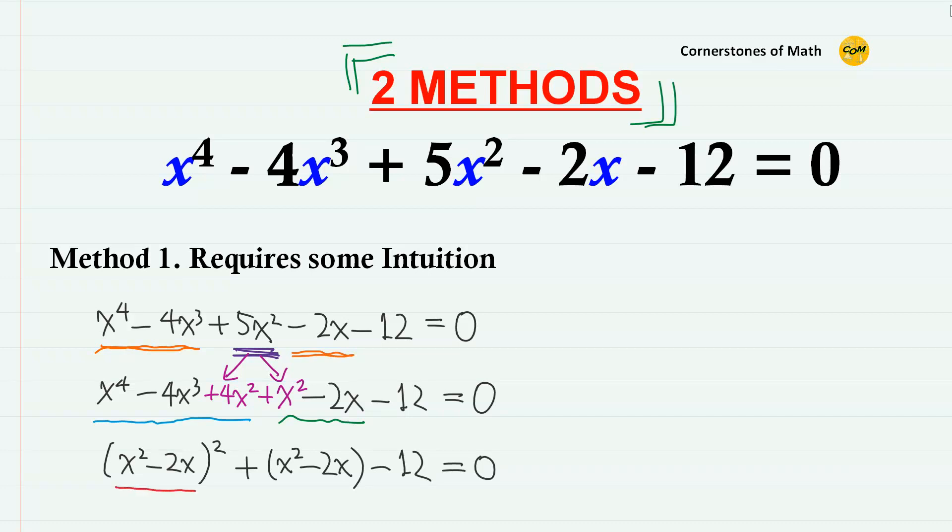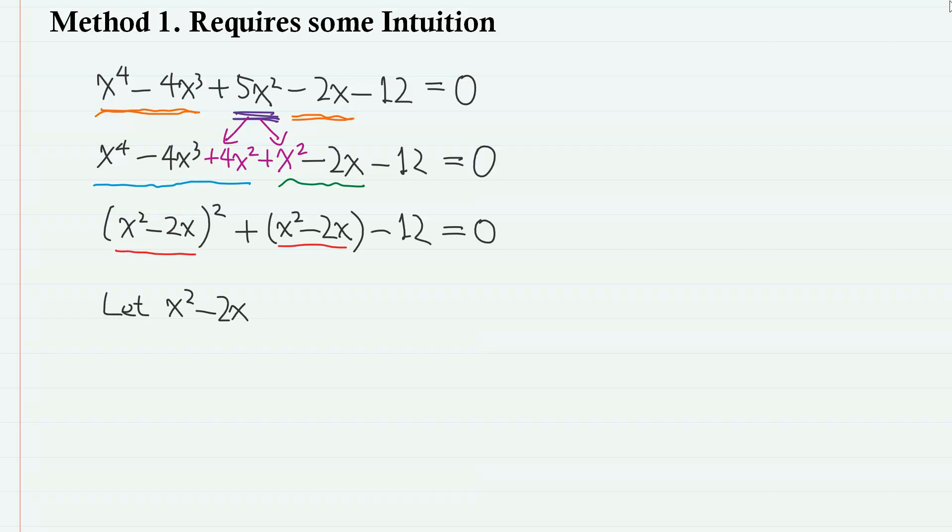So we have a common part, x squared minus 2x, where we can apply substitution. Let x squared minus 2x as t, then we have t squared plus t minus 12 equals zero. So t minus 3, t plus 4 equals zero, therefore t equals 3 and minus 4.